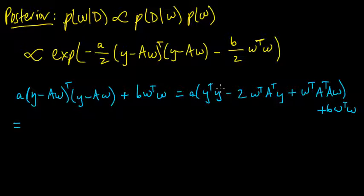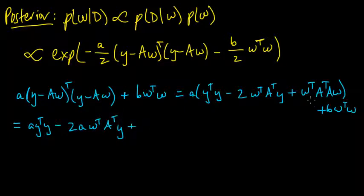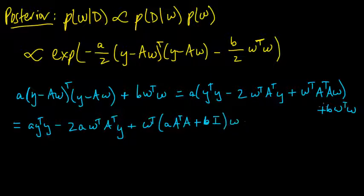Okay. Now, if we multiply the a through here, and we can combine these last two terms, we get a y transpose y minus two a w transpose A transpose y, plus, now let's pull out this w transpose on the left, we get little a times A transpose A, and let's pull out the w on the right, so this becomes plus b times the identity matrix, w.